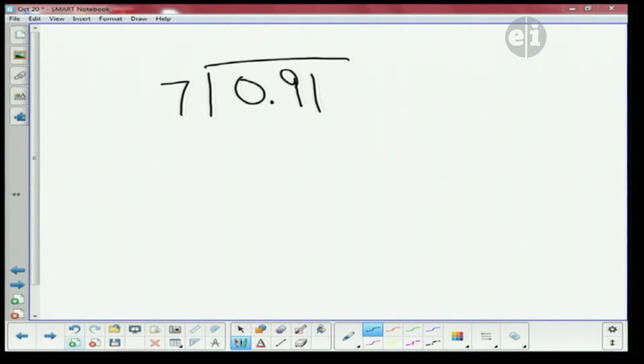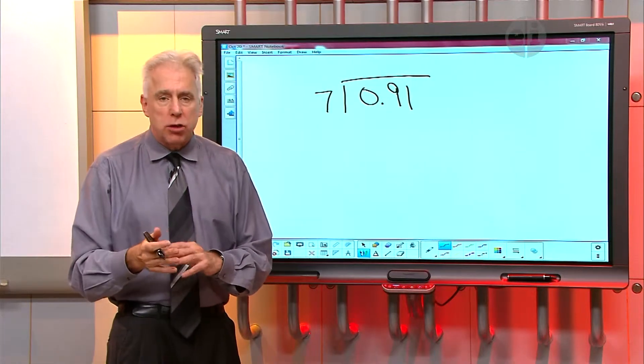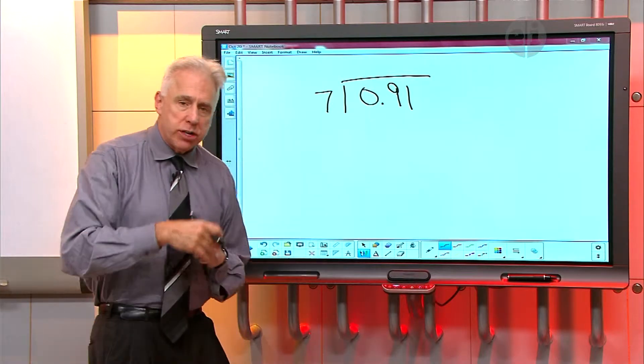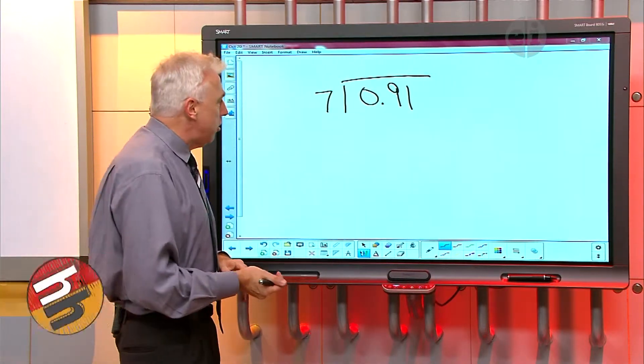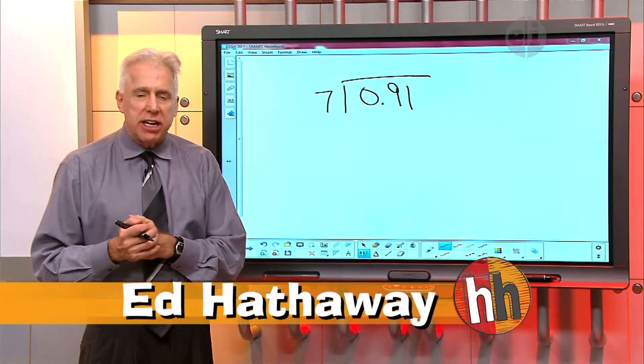You read it as a regular number here. You said 0 and 91 hundredths. Quite often we refer to the decimal point by using the word 'and.' And it had two digits after the decimal point to the right of it, and that took you to the hundredths place. So you said 91 hundredths. And we're dividing it by seven. Nice job presenting that problem, Thomas.